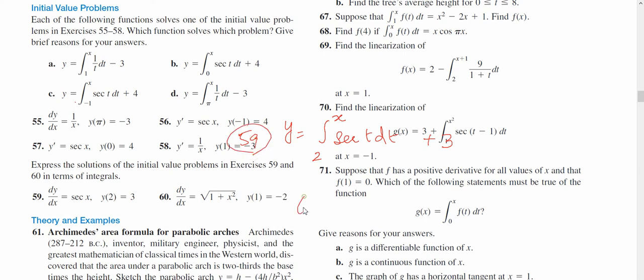Now question number 60. In case of 60, y(1) is equal to minus 2. So guess what should I write here? Integral, upper limit is x, lower limit must be 1. That is the initial point of the function. Square root 1 plus t squared, because it will become square root 1 plus x squared when we have derivative with respect to x using fundamental theorem. So this is integral from 1 to x of square root 1 plus t squared dt. And what is the constant which must be added? y(1) equal to minus 2, so we should add minus 2. So this is the solution of this differential equation in terms of integrals.